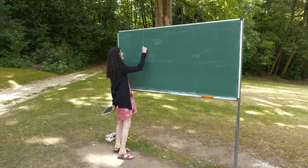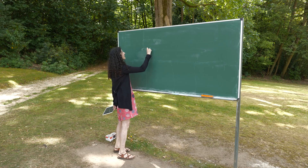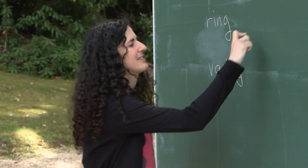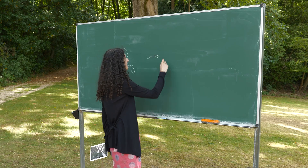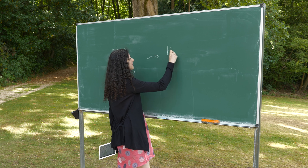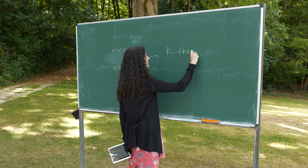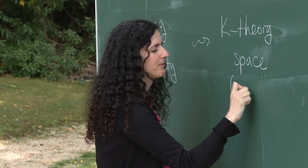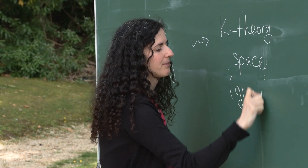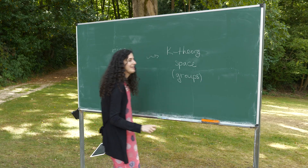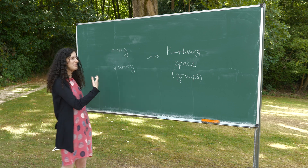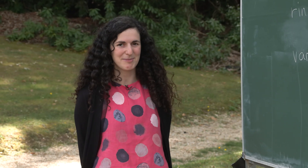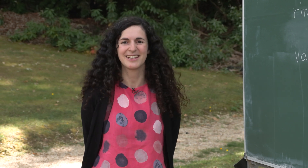Previously we have seen that K-Theory is an invariant. It takes a ring or an algebraic variety and associates with it its K-Theory space or K-Theory groups. So it's an example of an invariant.